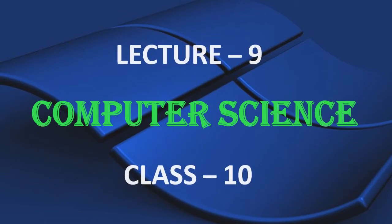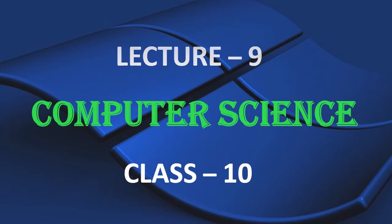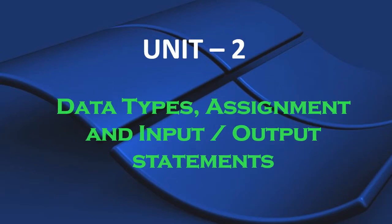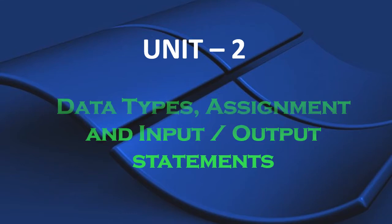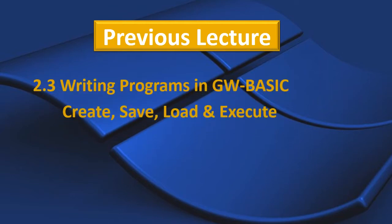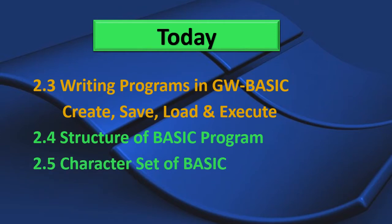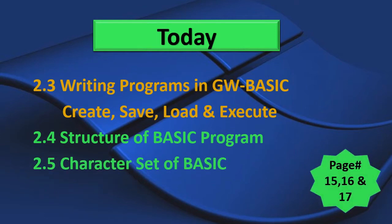Today we are here for lecture number 9 of Computer Science class 10th. We are doing unit number 2: data types, assignment, and input-output statements. Today we are going to cover the structure of a basic program and the character set of basic. These topics are given on pages 15, 16, and 17 of your textbook.